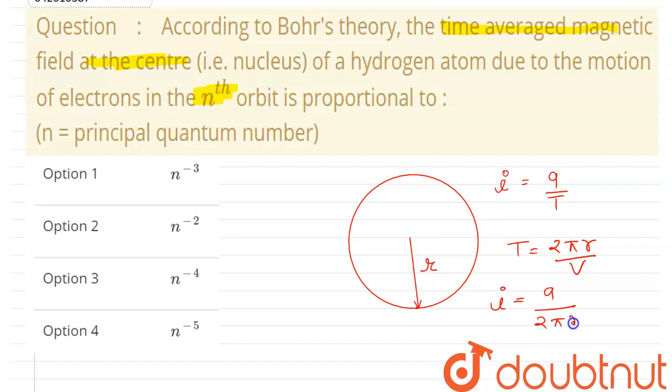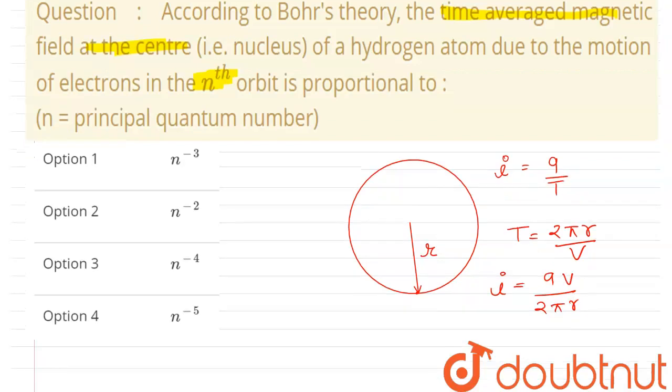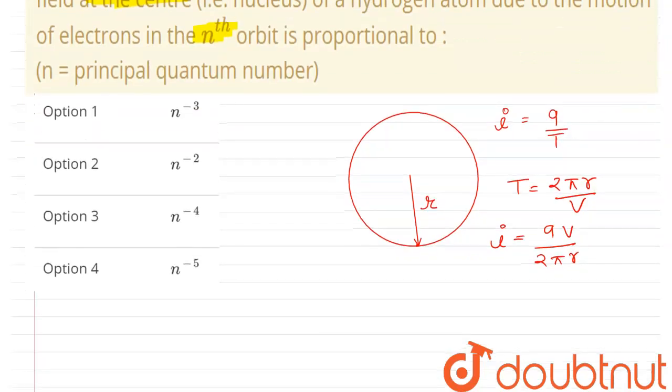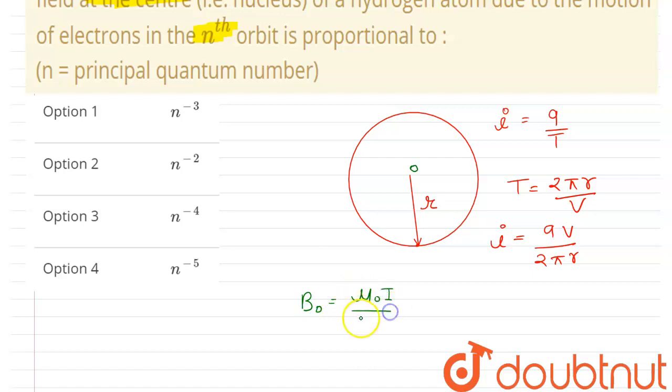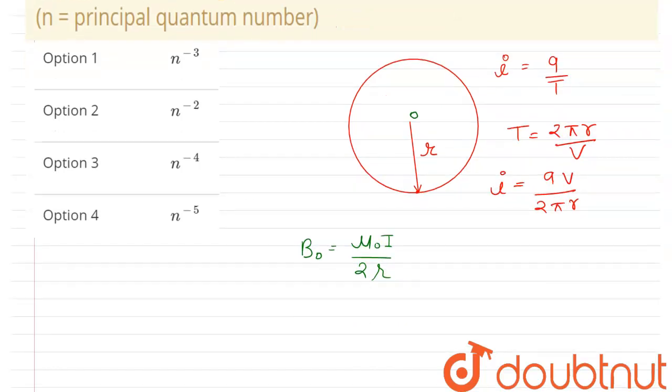i = qv/(2πr). Now if the current is induced here, then the magnetic field will be there at the center of this circle. And we know that because of a circular current-carrying loop, the magnetic field at the center is B = μ₀i/(2r). Now we know that the current is this, so just put this value of current to know the magnetic field at the center.